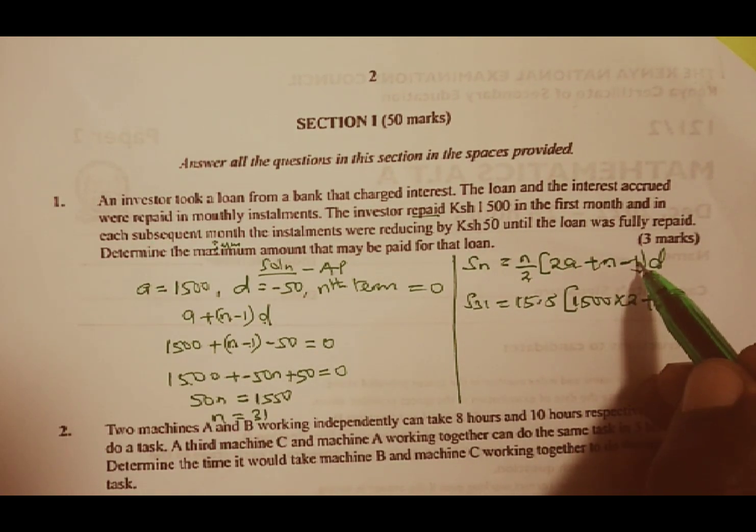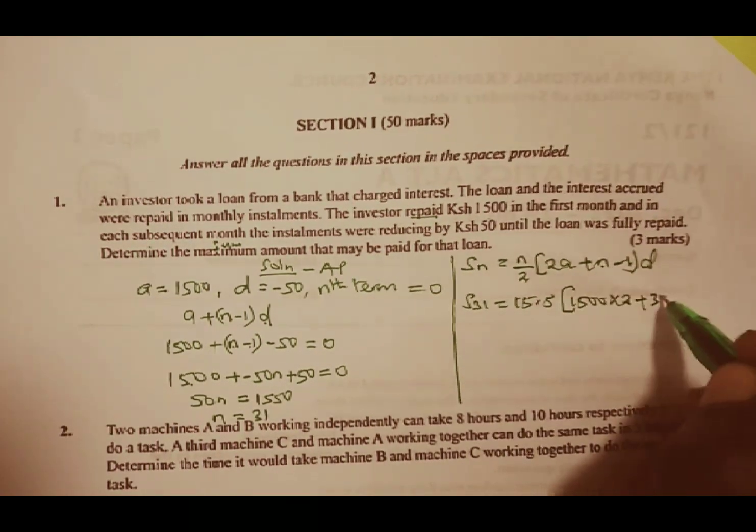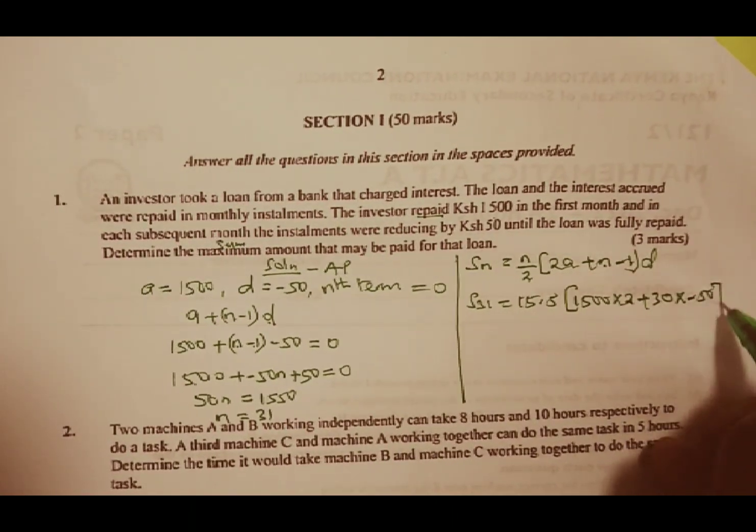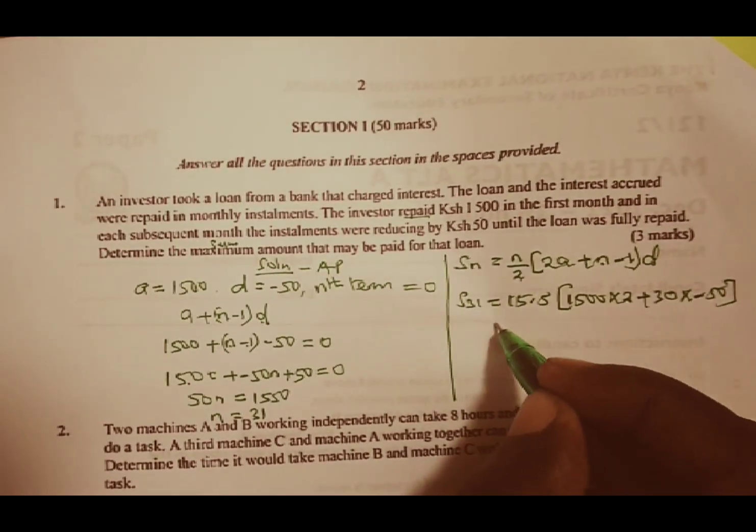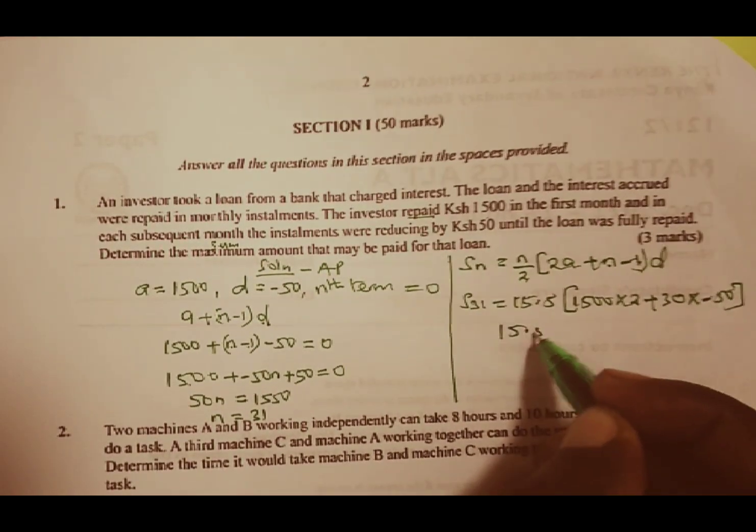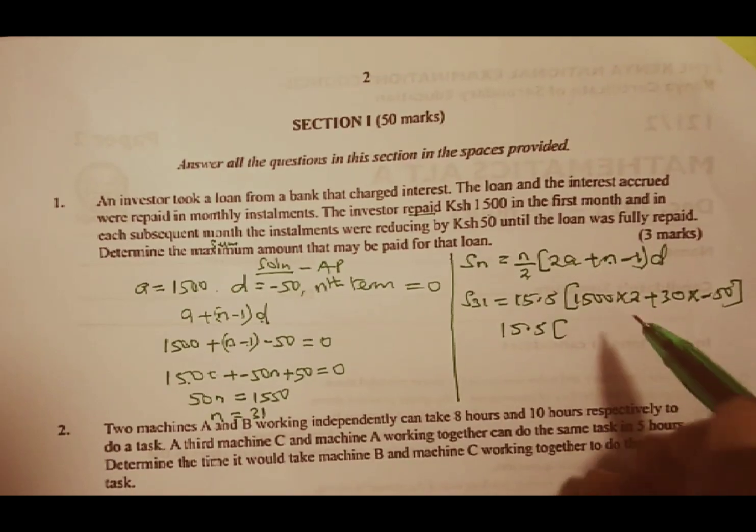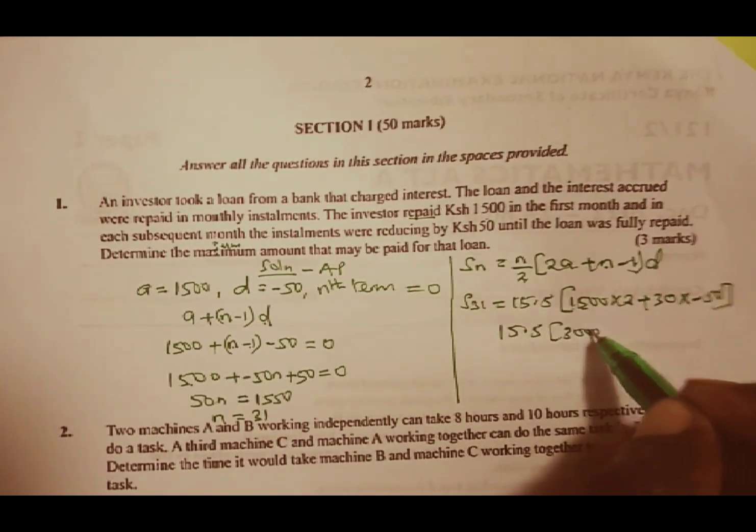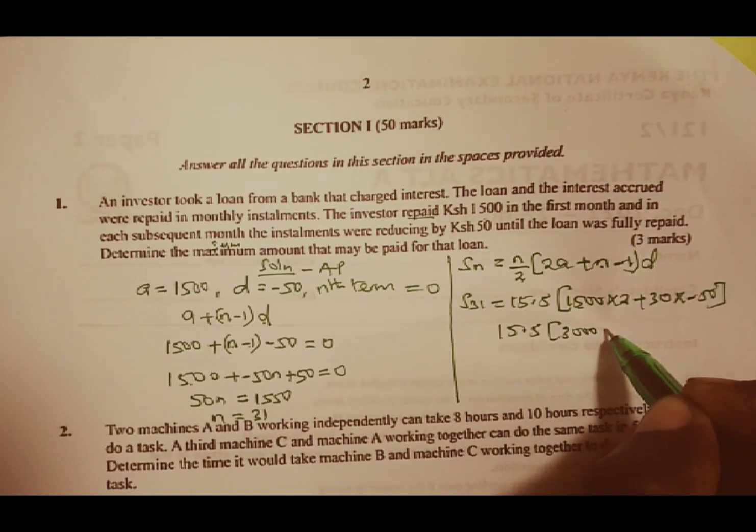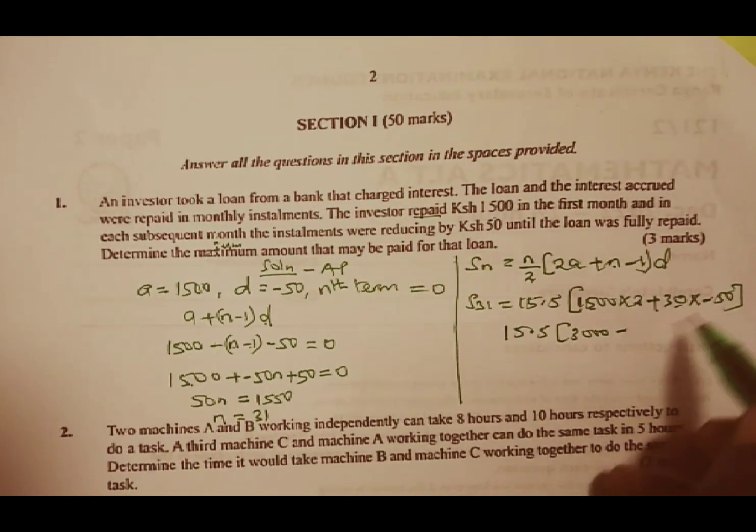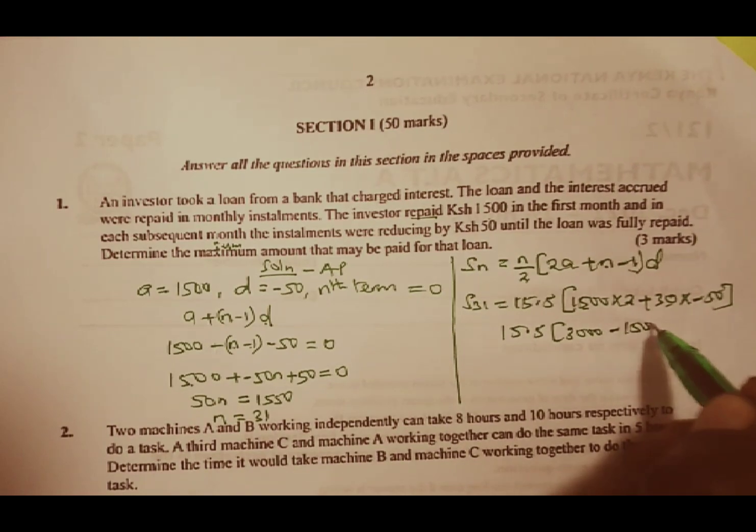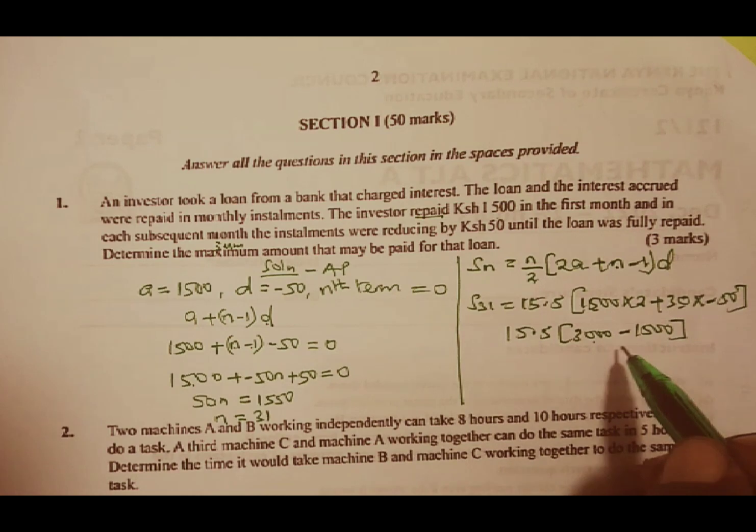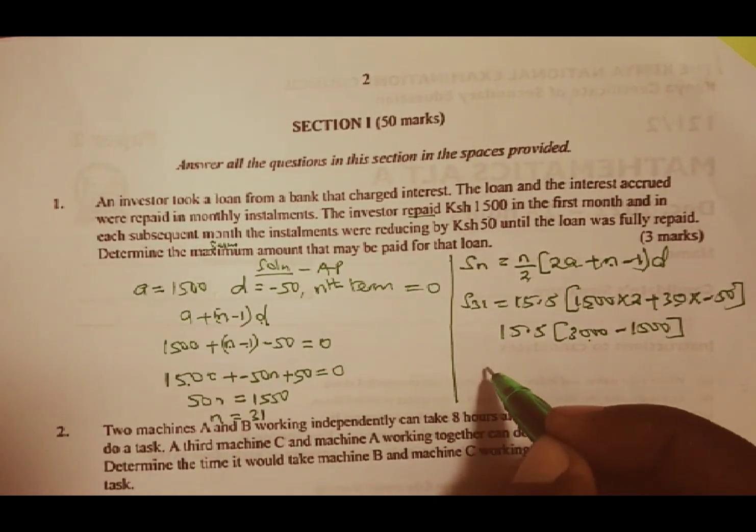That gives us 1500 times 2 plus we have N, which is 31. 31 minus 1, you get 30. And therefore, we are going to have 30 multiply by negative 50. We move down and have 15.5 into, we have 1500 multiply by 2, you get 3000 minus 30 times 50, you get 1500. 3000 minus 1500, you get 1500.